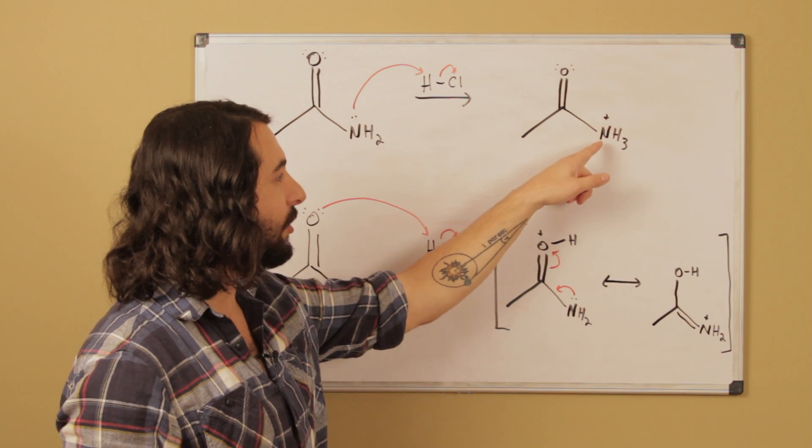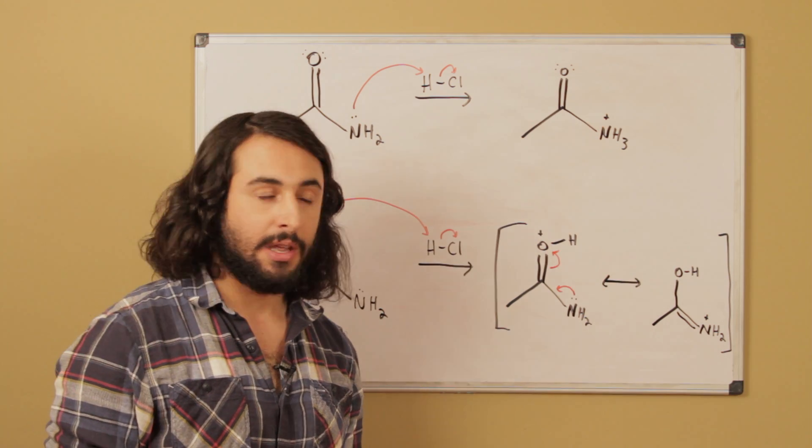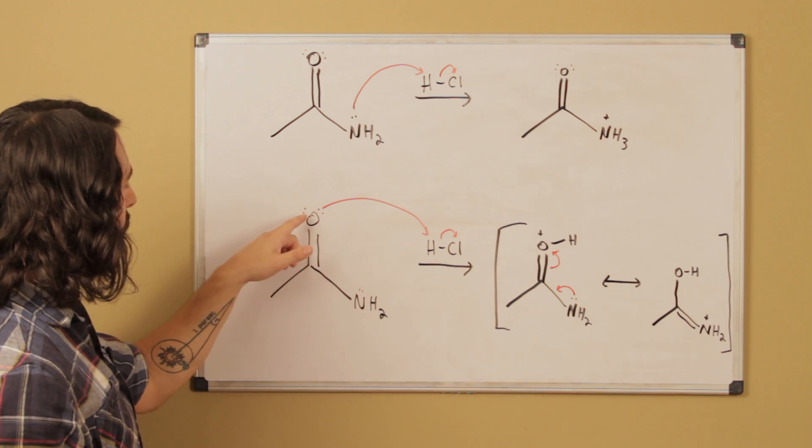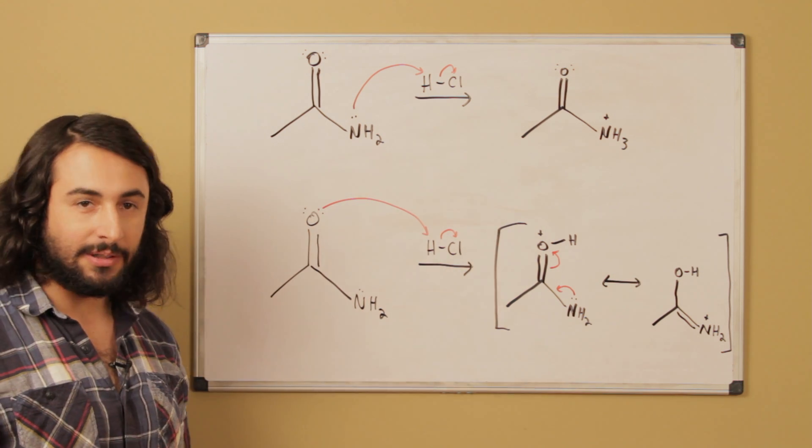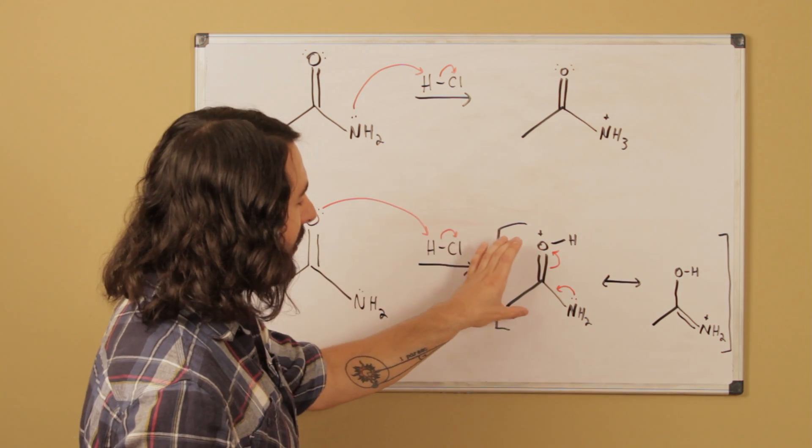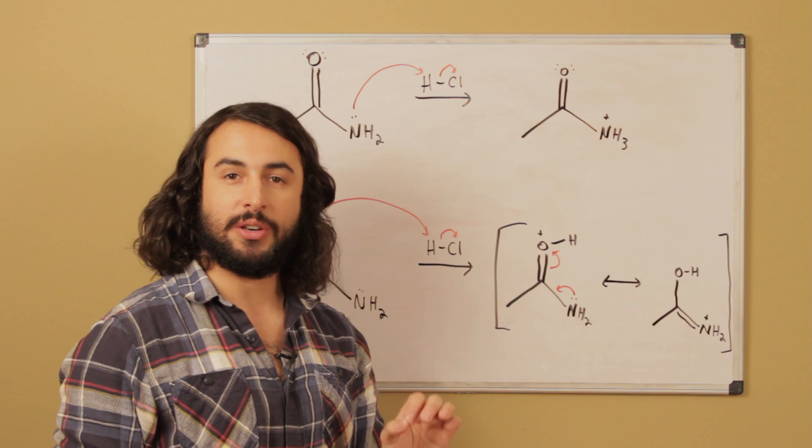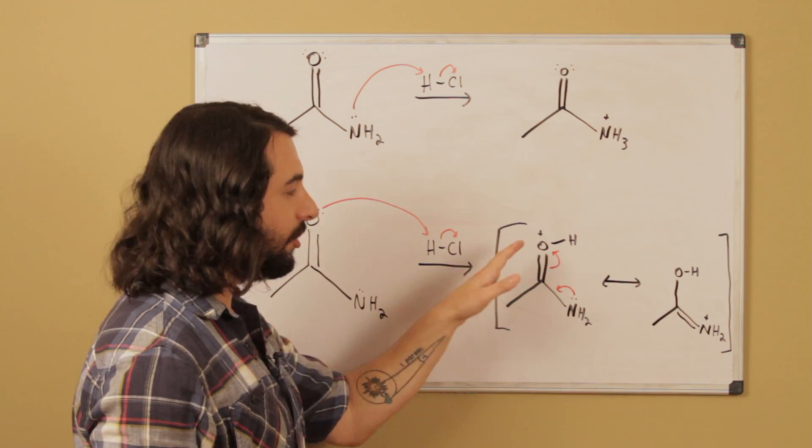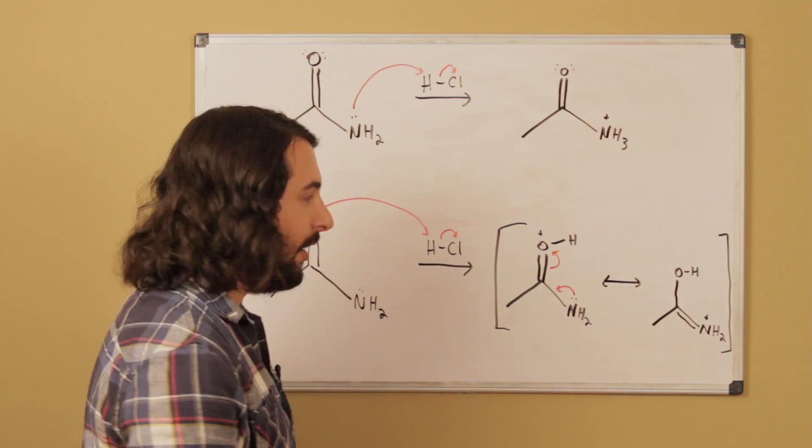And now look at the other option. We have these two lone pairs on the carbonyl oxygen. Let's say one of those grabs a proton. This is what would result. And then the key feature that we want to understand about this is that this structure is resonance stabilized.